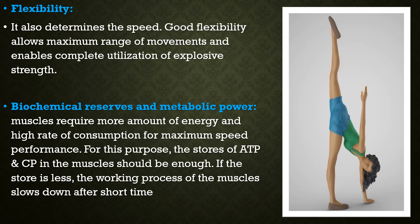Next is biochemical reserves and metabolic power. For maximum speed performance, the muscles require more energy at a very high rate of consumption. For this purpose, the ATP and CP stored in the muscle should be enough. If ATP and CP stores are less in contracting muscles, muscle contraction becomes slow after a short time due to insufficient energy supply. The energy supply also depends on certain enzymes which increase the metabolic power. The amount of ATP, CP, and rate of energy supply can be enhanced by training. Therefore, biochemical reserves and metabolic power determine speed.